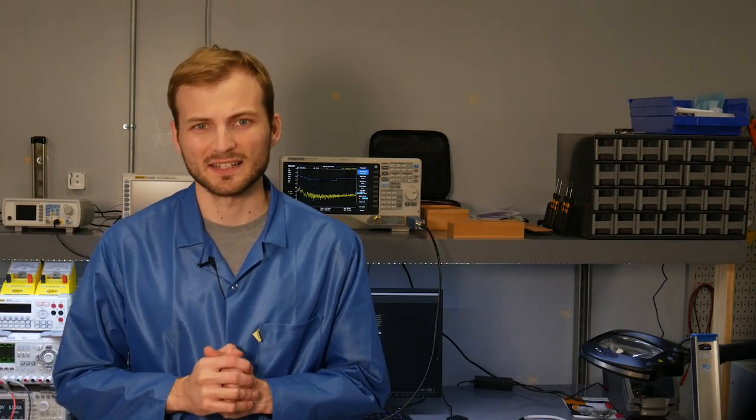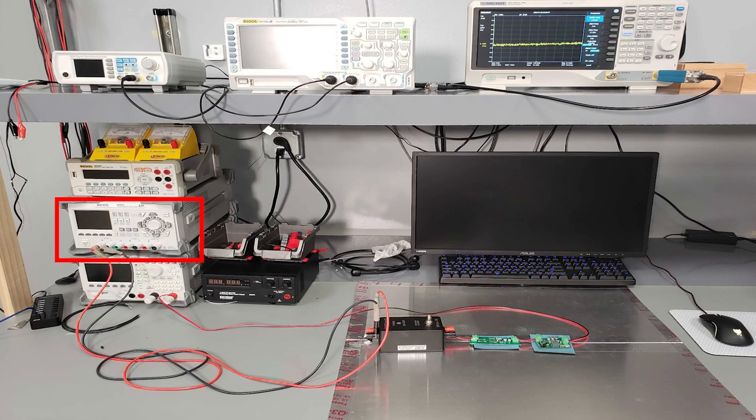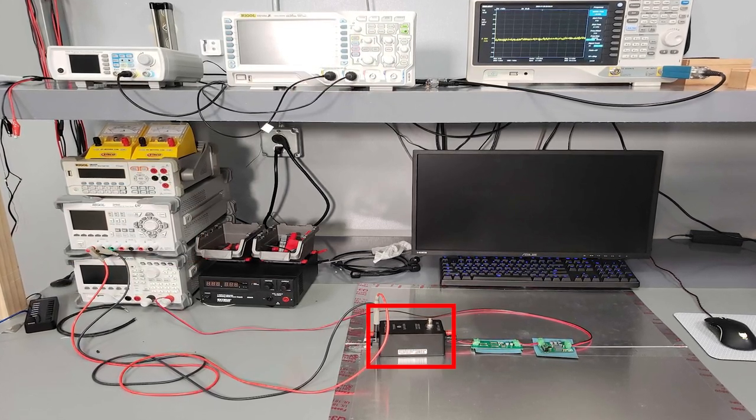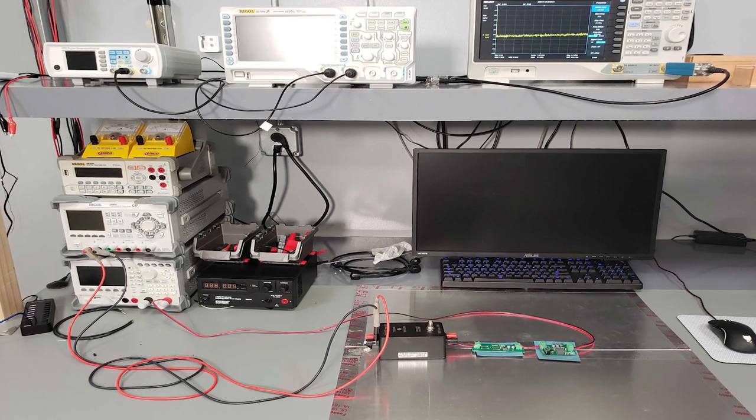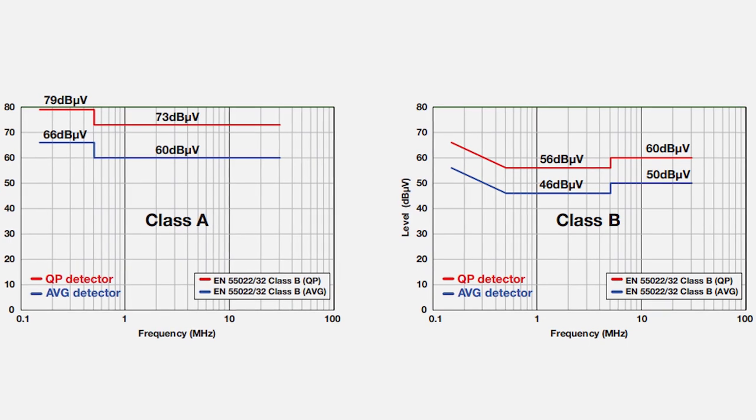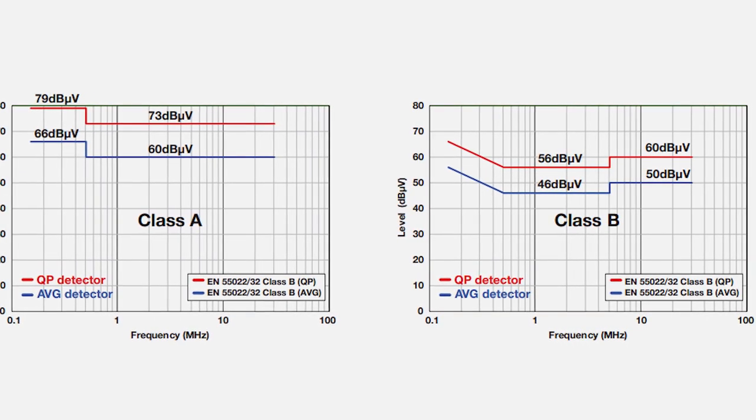The test setup is going to be identical to the last time I tested conducted emissions. I'm using my Rigol linear power supply. That will power the Tekbox LISN, which then powers the filter board and then the buck converter. The output of the LISN goes through a negative 10 dB attenuator and that goes directly to the spectrum analyzer. For these tests, I finally have a proper limit setup.